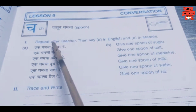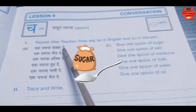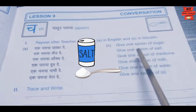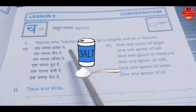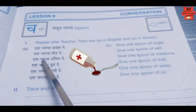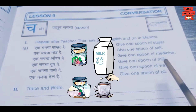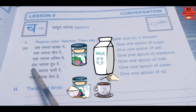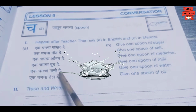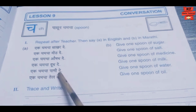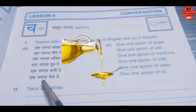We will read in English first and then in Marathi. Give one spoon of sugar — Ek chamcha sakhar de. Give one spoon of salt — Ek chamcha meat de. Give one spoon of medicine — Ek chamcha aushad de. Give one spoon of milk — Ek chamcha dood de. Give one spoon of water — Ek chamcha paani de. Give one spoon of oil — Ek chamcha tel de.